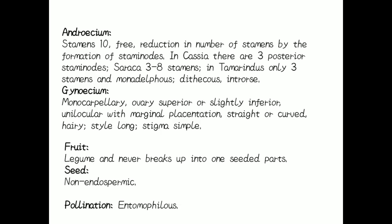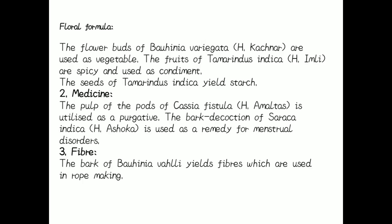Gynoecium: monocarpellary, showing a single locule, superior or slightly inferior, unilocular with marginal placentation. Style is long and straight or curved, hairy; stigma is simple. Fruit: legume, never breaking up into seeded parts. Seed is non-endospermic. Pollination is entomophilous, with the help of insects.